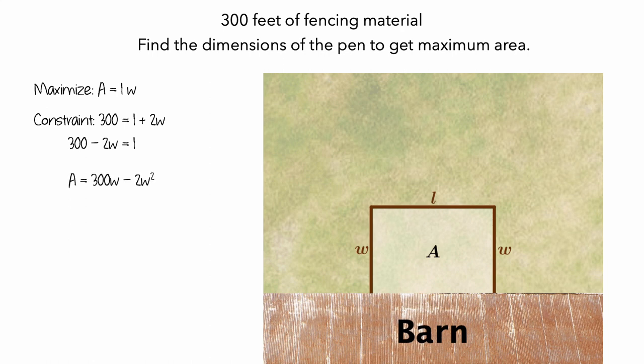Now A is a continuous function of a single variable, W. The smallest value W could be is 0, because we can't have a negative width. The largest value W could be is 150, because if the width were 150, all 300 feet of fencing would go into the width. So the domain of A is all numbers between 0 and 150.